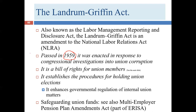This was in response to congressional investigations — I believe those may have been led by Bobby Kennedy into union corruption. The act provides a bill of rights for union members: what they are entitled to expect from their union, with enforceable rights to get that. It also describes how union internal elections will happen — not about whether a particular employer will go union, but about the internal elections within a union to elect its officials.